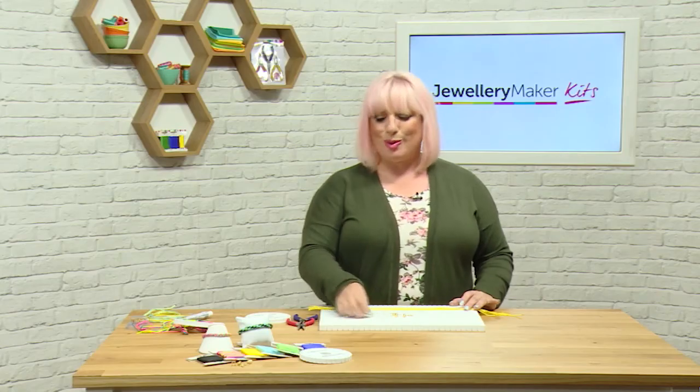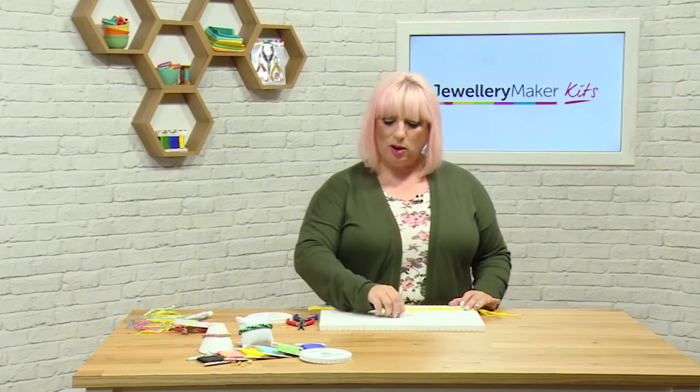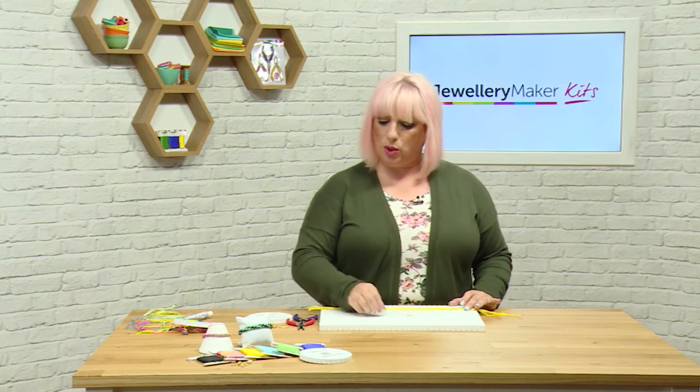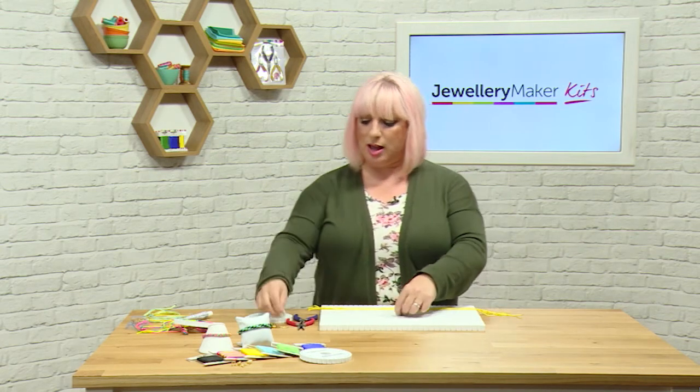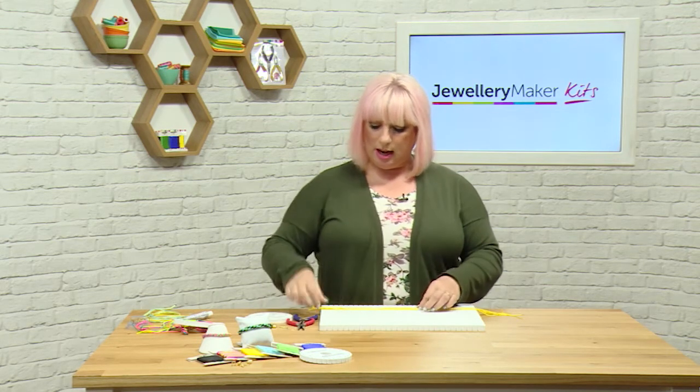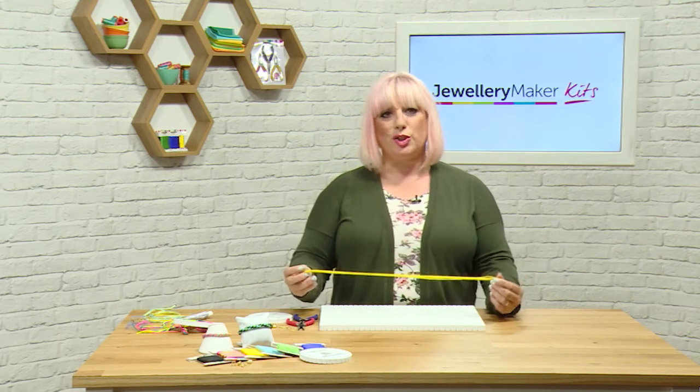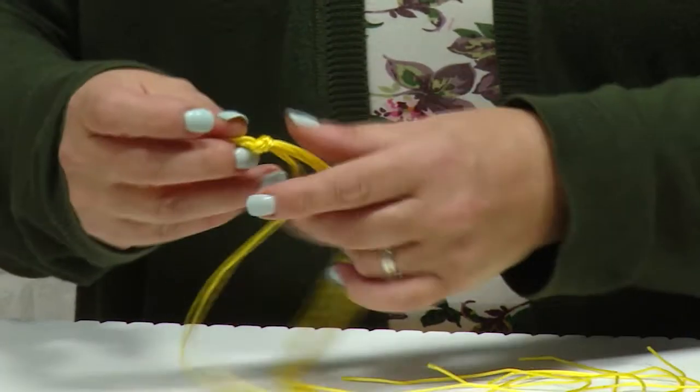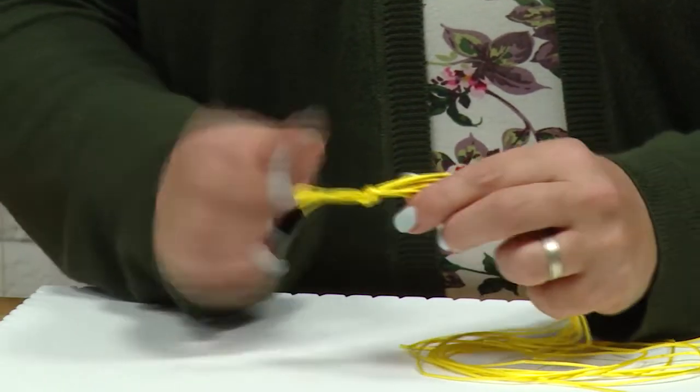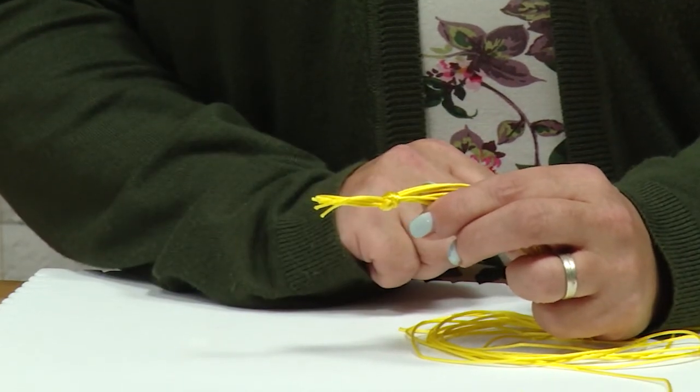So to get started what we need to do is take any color of our cord, so you can have multiple colors of your cord, it doesn't have to be all the same color, but what we're looking for is we need eight lengths of cord that are 55 centimeters long. So in this case I've used all the yellow cords and all I've done is I've tied them in a knot at the end.